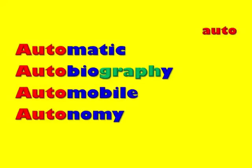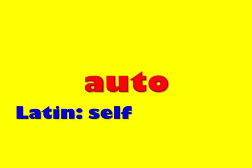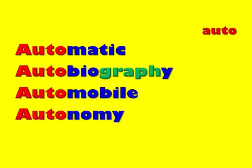The next word on our list is "auto." Try to think of some words that contain the root word auto. Here's a list of some words that contain the root word auto. Auto is a root word that comes to us from Latin, and it means self. Automatic means able to move by itself. The root mat- means motion or the ability to move, so something that's automatic moves by itself.